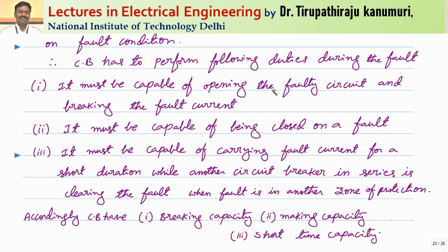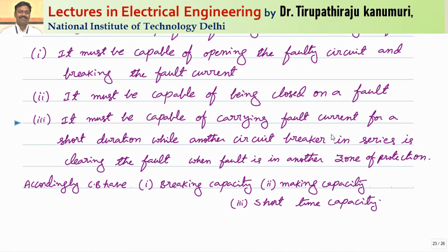The circuit breaker must perform the following duties under fault conditions. First, it must be capable of opening the faulty circuit and breaking the fault current. Second, it must be capable of being closed on to a fault — because even though 80% of faults are transient, the remaining 20% are permanent. Under fault conditions when closing, arc will occur and high fault current may melt and permanently weld or damage the contacts. Third, it must be capable of carrying the fault current for a short duration while another circuit breaker in series clears the fault.